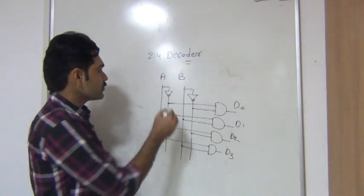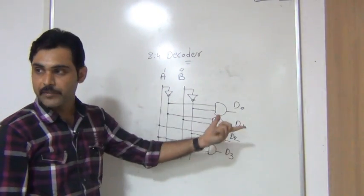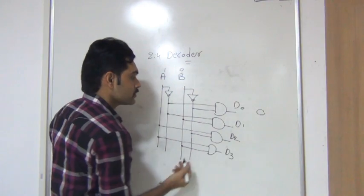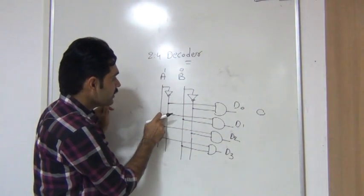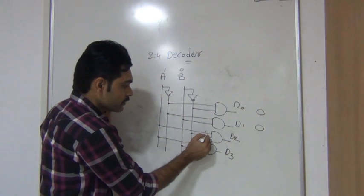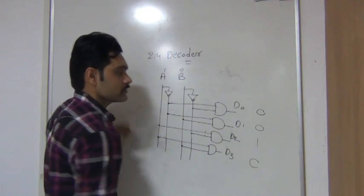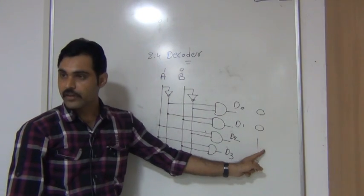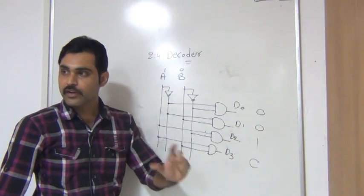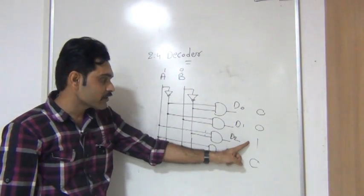Now you can apply any value to verify. I want to verify value 10. If I apply value 10, D2 should be active. When 10 is applied, the NOT gate on A produces 0, and 0 into any value is 0, so those gates output 0. When A is 1, you get 1 here; when B is 0, the NOT gate produces 1. So D2 will be 1. When you apply 10, you are getting output from only D2. By applying different inputs, you can get the corresponding output. The decoder decodes a particular value - 10 corresponds to D2 only.